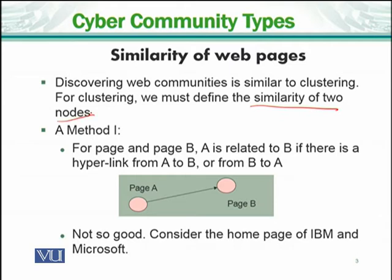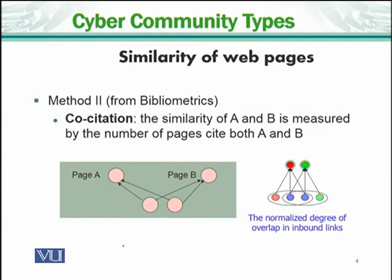The first method of similarity: if we have pages A and B, one way to measure similarity is that A is related to B by a hyperlink, and B is also hyperlinked back to A. However, a direct hyperlink alone is not a good indicator. For example, if IBM links to Microsoft and vice versa, that does not necessarily mean both pages are similar.